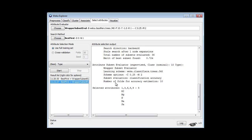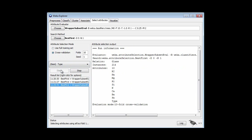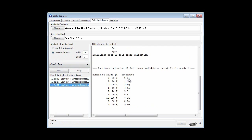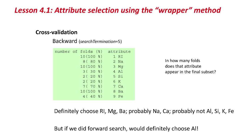Let's go back to Weka. I'm going to set cross-validation and see what happens. What it's doing now is performing its attribute evaluation ten separate times, and showing us how many times each attribute appeared in the final attribute subset. For example, RI appeared in nine out of ten attribute subsets. So coming back to the slide, RI, MG, and BA appear in all ten folds, while AL, SI, K, and FE appear in only two or three folds. This gives an indication of the stability of the attribute selection method, and for this dataset it's not really very stable, as we've seen by getting different subsets when we tried different parameters of the wrapper method.